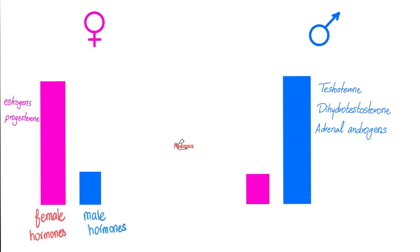An important fact: just because you're female doesn't mean you only have female hormones. You have female hormones for the most part, but also a tiny amount of male hormones. Conversely, males have mostly androgens and a tiny amount of female hormones. Female hormones include three estrogens and progesterone. Male hormones include testosterone, dihydrotestosterone, and adrenal androgens. Adrenal androgens are present in both males and females because both have adrenal glands.